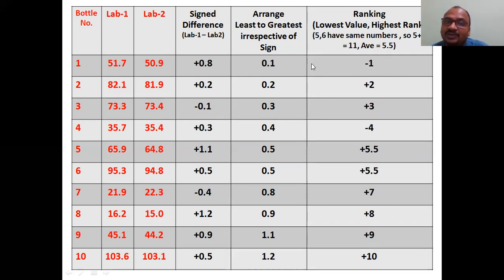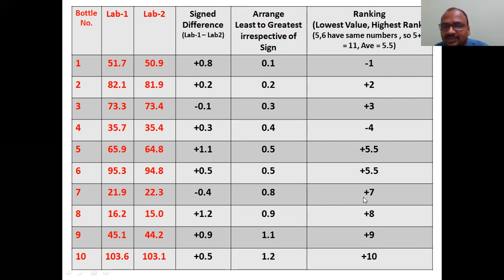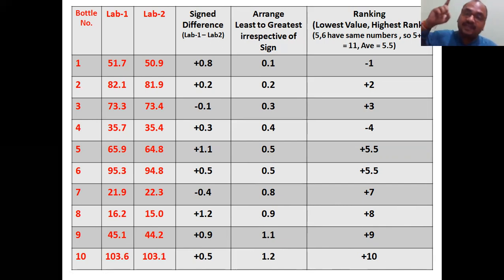Now, for each rank, you restore the sign from the original difference. Where did 0.1 come from? — plus sign, so put plus here. Where did 0.2 come from? — plus. Where did 0.3 come from? — plus. Where did 0.4 come from? — negative sign, put negative. And 0.5, 0.5 — both plus. 0.8 — plus. 0.9 — plus. 1.1 — plus. 1.2 — plus. So: give the rank first blindly, then for that rank assign the sign.